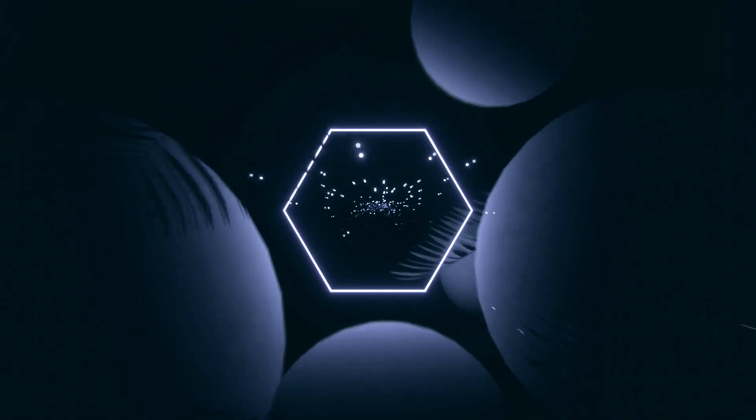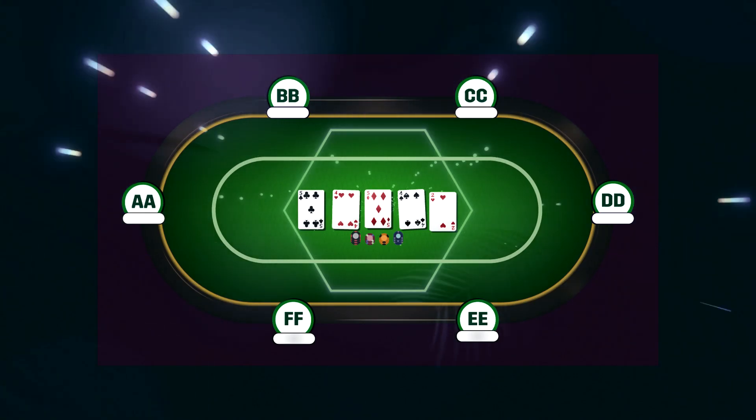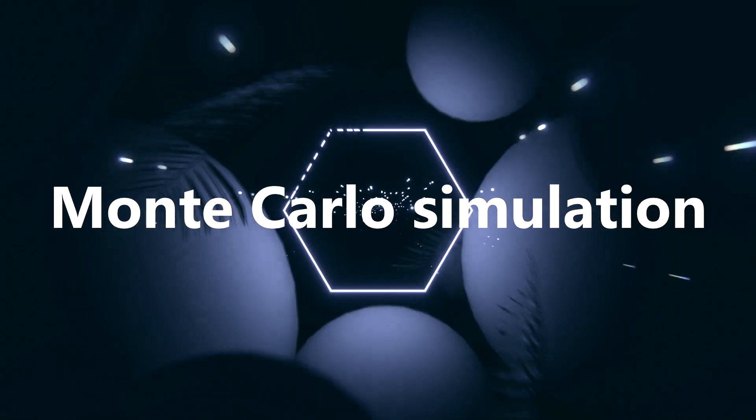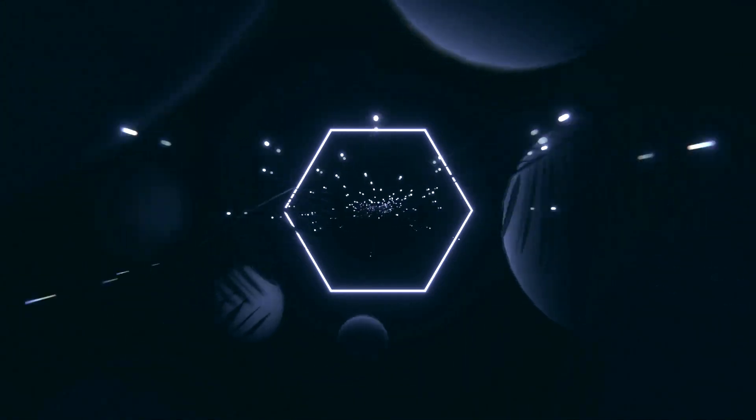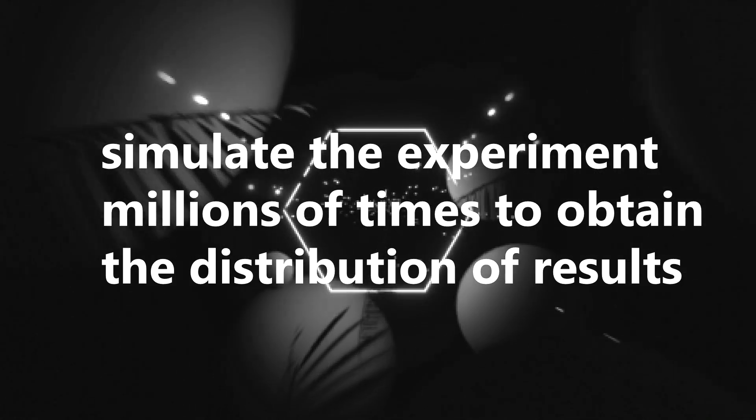However, if the experiment is more complex, like playing poker and estimating the probability of winning, the task becomes more intricate. This is where Monte Carlo simulation can help. The idea is extraordinarily simple. Simulate the experiment millions of times to obtain the distributional results.